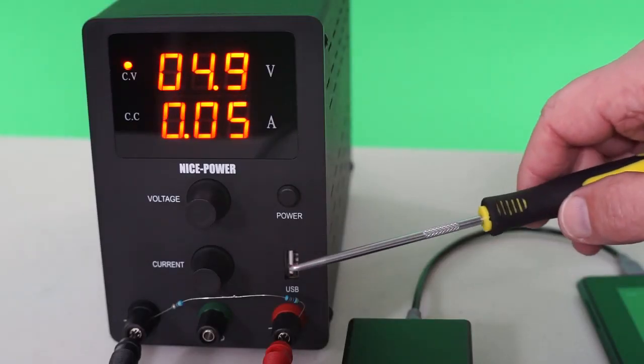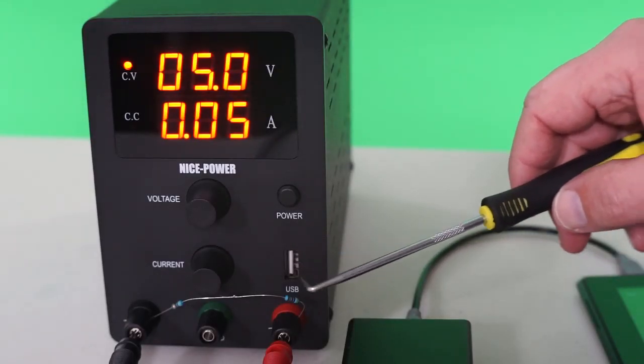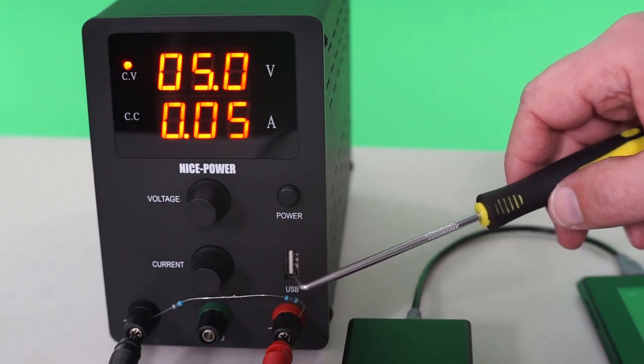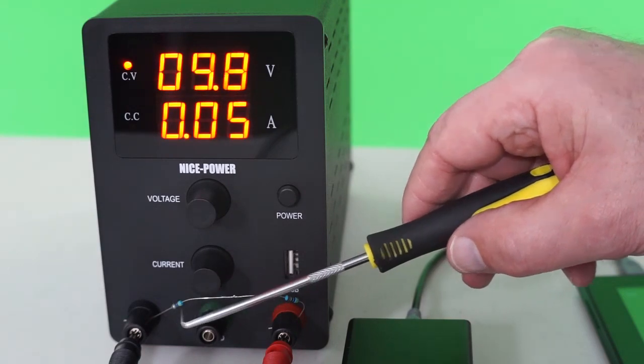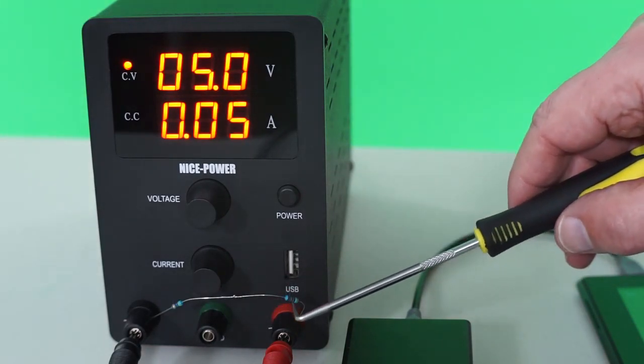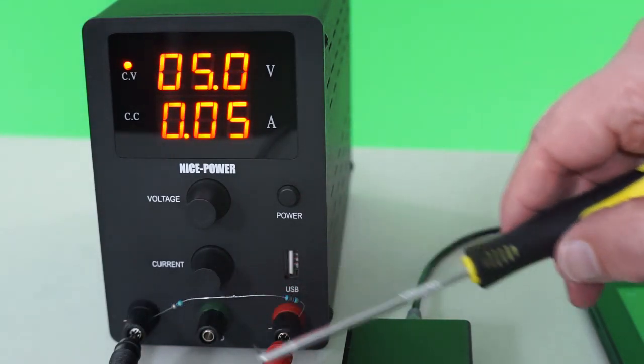Let's step this down a little bit to loads that are more representative of small electronic projects. I have two small resistors in series that total 100 ohms across the output of the power supply.